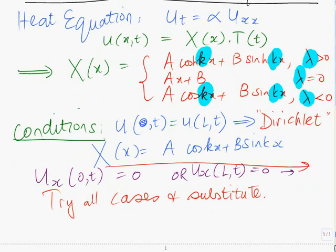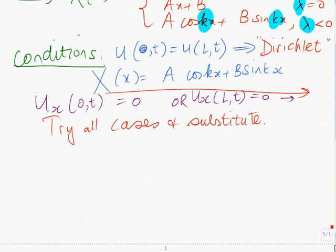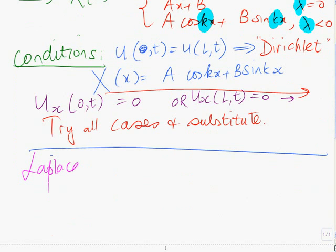Now, the very same thing applies to the case of the Laplace equation in the square. The only difference with the Laplace equation in the square is that you have uxx plus uyy equals to 0, and again, you've got to test all the conditions.